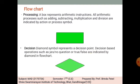Decision: Diamond symbols represent a decision point. Decision-based options such as yes or no questions, or true or false conditions, are indicated by the diamond shape in a flowchart.